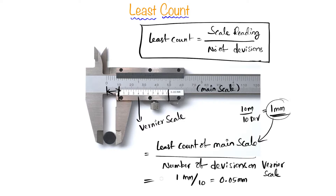Vernier calipers are also available with a least count of 0.02 mm as well. That's all about least count. We also wrote an article on least count — you can find the link in the description. If you have any thoughts, comment below. Please subscribe to our channel. Thanks for watching.